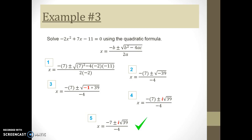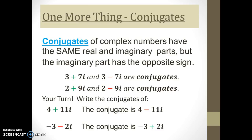One last topic we didn't cover in class: conjugates. You may be asked to identify the conjugate of a complex number. It's super easy — conjugates have the same real and imaginary parts, but the imaginary part has the opposite sign. So the conjugate of 3 plus 7i is 3 minus 7i, and the conjugate of 2 plus 9i is 2 minus 9i. The conjugate of 4 plus 11i is 4 minus 11i. And the conjugate of negative 3 minus 2i — the real part stays the same, the imaginary sign flips — is negative 3 plus 2i.